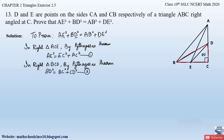If we look at what we have to prove, we need AE² + BD² on the left-hand side. So let us add equation 1 and equation 2. Adding equations 1 and 2, we get: AE² + BD² = EC² + AC² + BC² + CD². We have now obtained the left-hand side of the equation we need to prove.